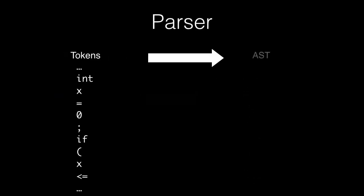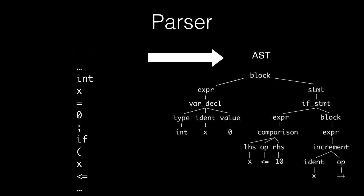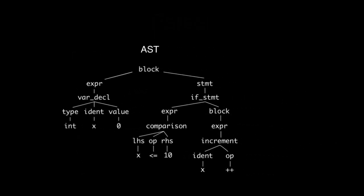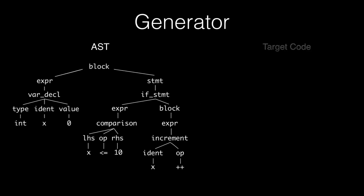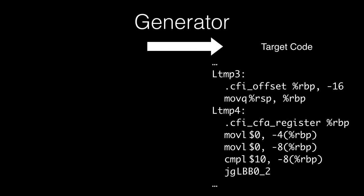These tokens are then sent to the parser, where groups of tokens that represent expressions and statements are converted into the abstract syntax tree. Finally, the AST is used to generate the target code — in this case, assembly.